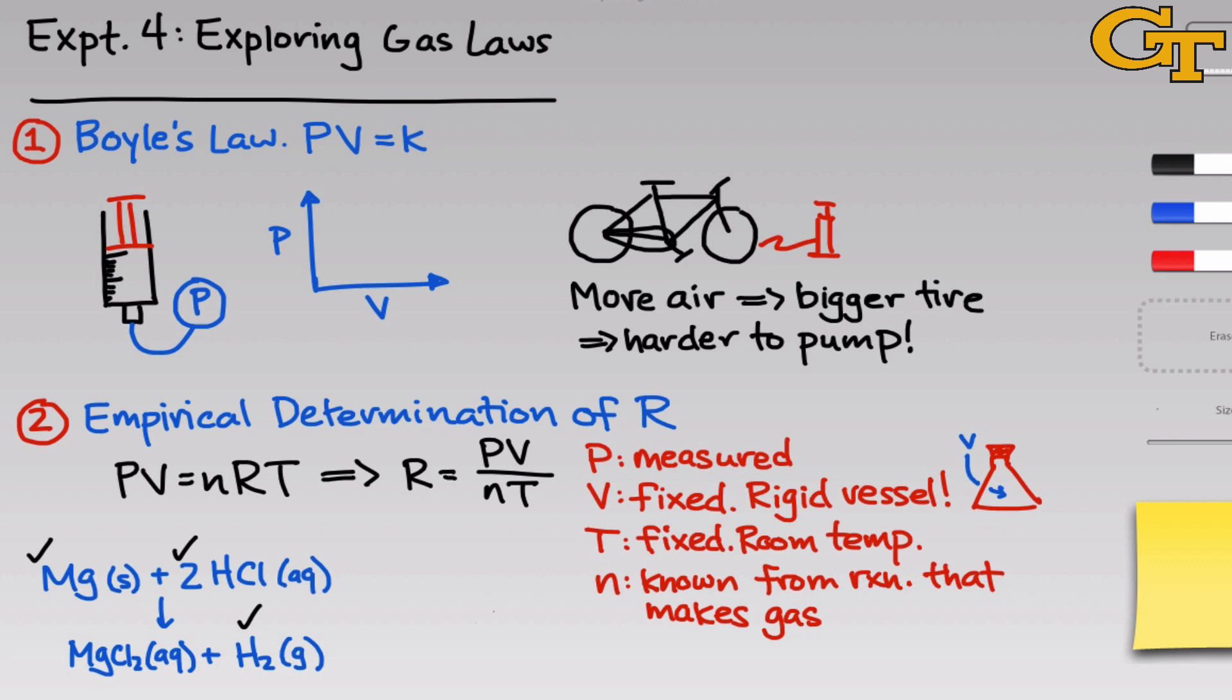So we know the number of moles of hydrogen gas that are generated by this reaction, and if we assume that that gas takes up the entire volume of the container and has the same temperature of the room, then we can measure the pressure change upon the generation of that gas to determine its pressure. At the end of the reaction, we'll be left with an aqueous solution of magnesium chloride, and the hydrogen gas in the headspace above the solution. So there are four different gases inside this system at the end of this reaction.